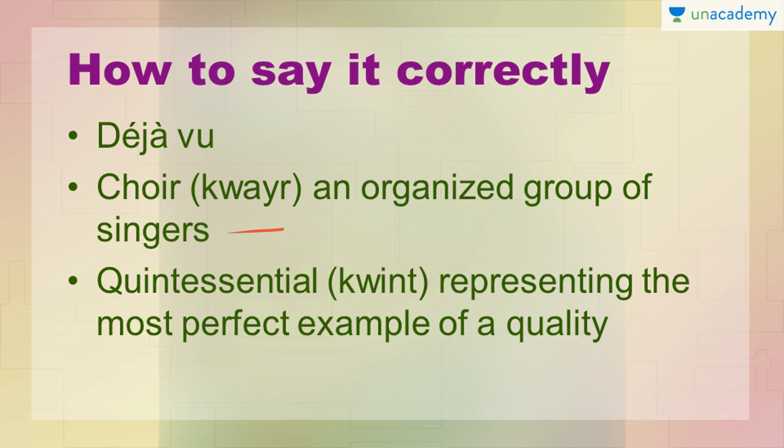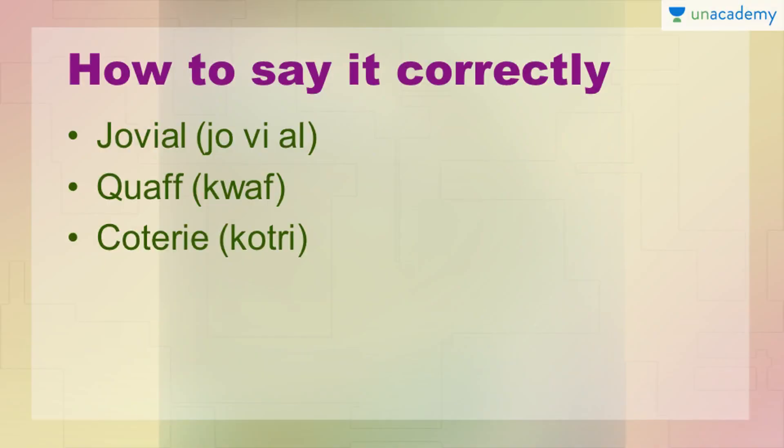The next word we have is 'quintessential.' Quintessential means representing the most perfect example of a quality. For example, agar noodles ka example loon toh sabse perfect example kaun sa lagega? Maggi hai na — so quintessential ka meaning bhi yeh hota hai: to represent the most perfect example of a quality.